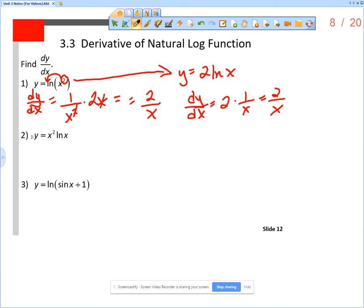Number 2: y equals x squared times the natural log of x. The first rule to consider here is the product rule. So dy/dx equals: product rule says to take x squared times the derivative of the natural log of x, which is 1 over x, plus the natural log of x times the derivative of x squared, which is 2x.